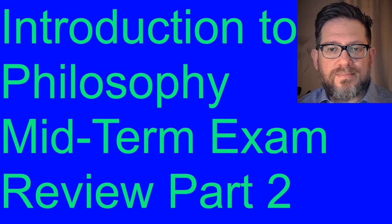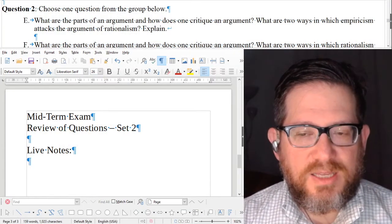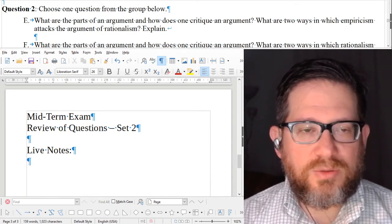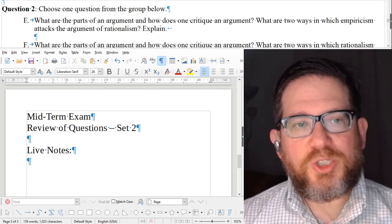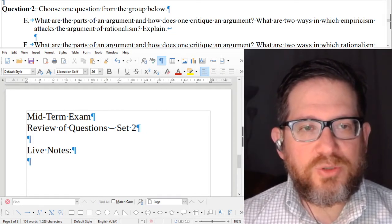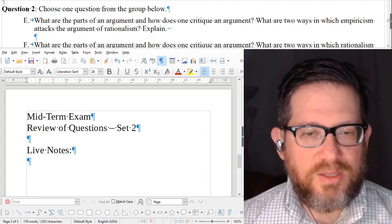We are back with part two of the midterm exam review for Introduction to Philosophy. This time we're going to look at the second set of questions, and there are only three questions here. We'll go through all of those and hopefully this will help you write an answer. We're going to start with question E — you can choose one question from these three, or if you don't want any of these, you must answer one from the other three sets.